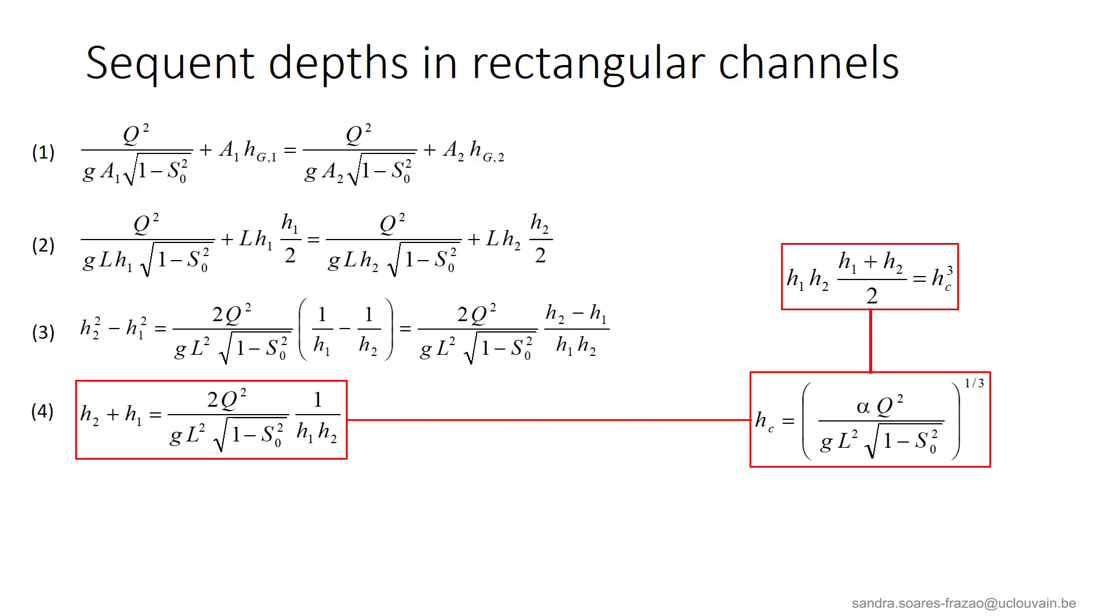Using the definition of the critical depth, we can obtain this interesting intermediate result here, that highlights the distribution of h1 and h2, the two sequent depths, around hc. This form here will be useful later when calculating the head losses in a hydraulic jump.